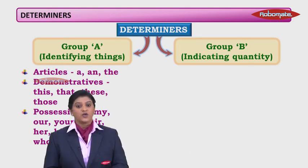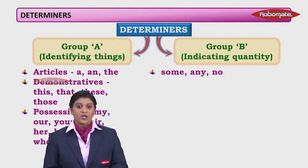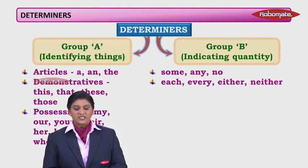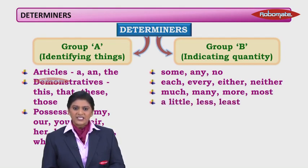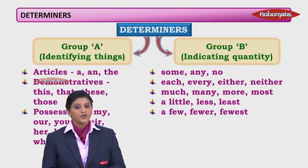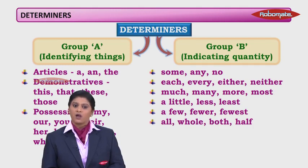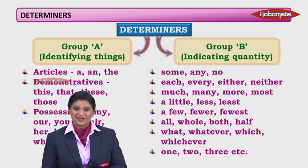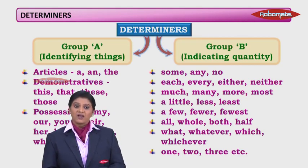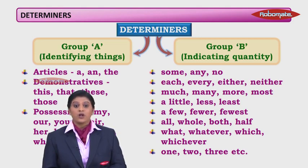Let us now look at group B determiners: some, any, no. Along with that, each, every, either, neither are also group B determiners. Much, many, more, most are also group B determiners. A little, less, least, and a few, fewer, fewest. All, whole, both, half. What, whatever, which, whichever. One, two, three, etc. could all be group B determiners, because they indicate quantity. For example, 'I want some water' indicates the quantity of water, which is a noun, and so 'some' becomes a determiner.